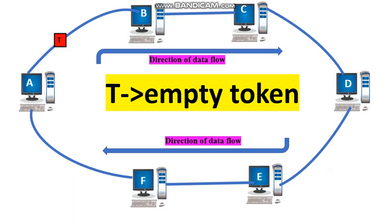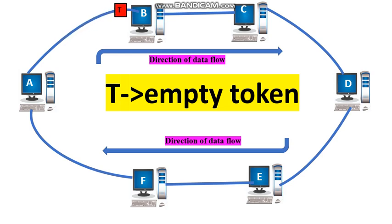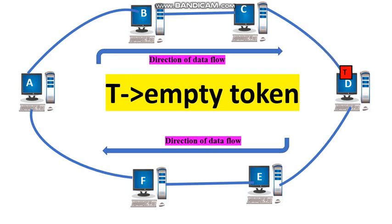In the token passing access method, a special 3-byte frame called a token is used. That token travels along the ring through all the stations. If any station wants to send data, then it should hold the token. At a time, only one station can hold the token and can transmit the data.